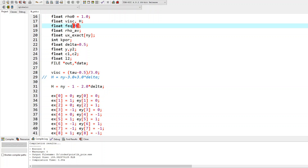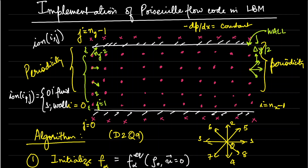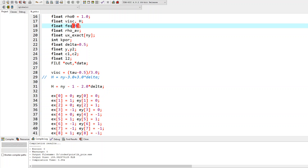The height of the channel needs careful calculation. There are Ny nodes so the last node address is Ny minus 1 and the first is 0. The total physical height between the two walls includes the distance between the outermost fluid nodes plus two times delta_y over 2, because the wall sits half a lattice spacing beyond each outermost fluid node. This gives a total channel height of Ny minus 2 lattice units.